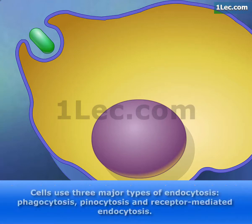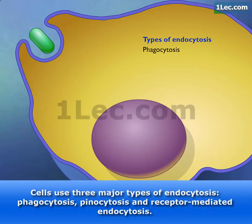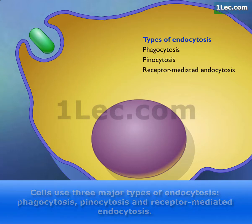Cells use three major types of endocytosis: phagocytosis, pinocytosis, and receptor-mediated endocytosis.